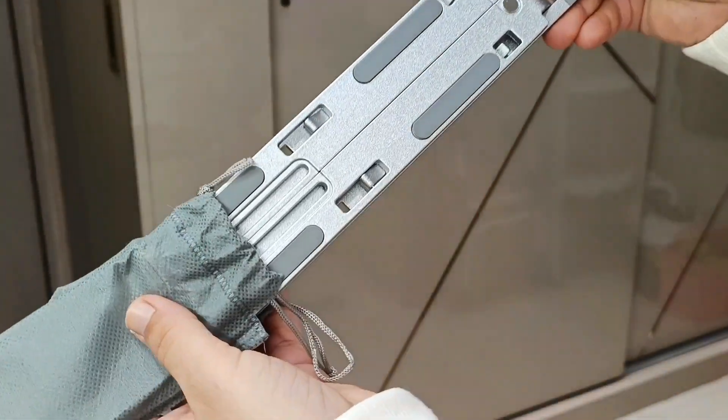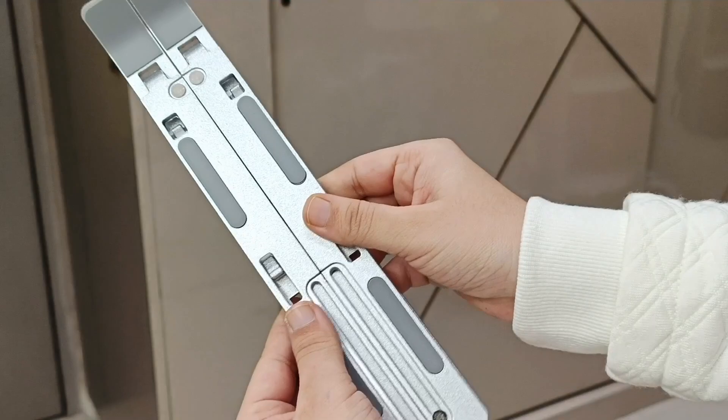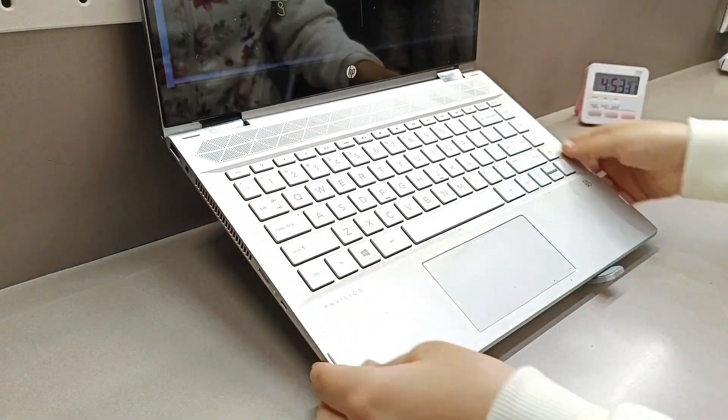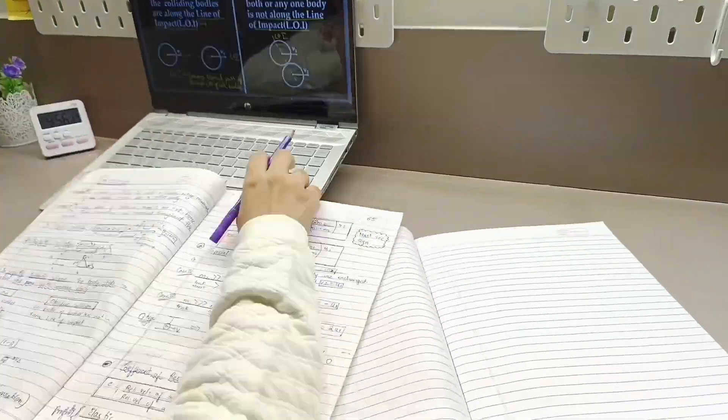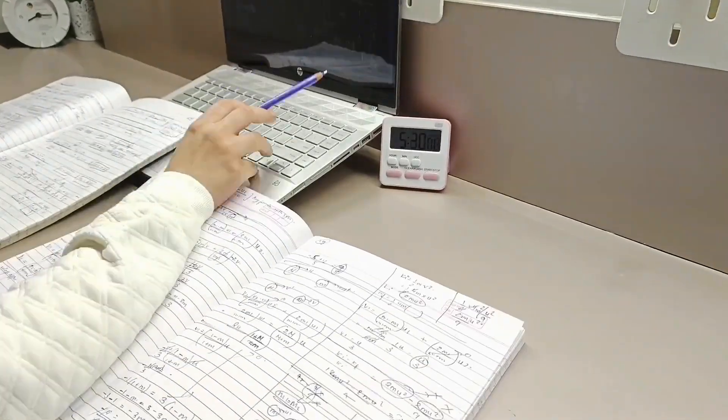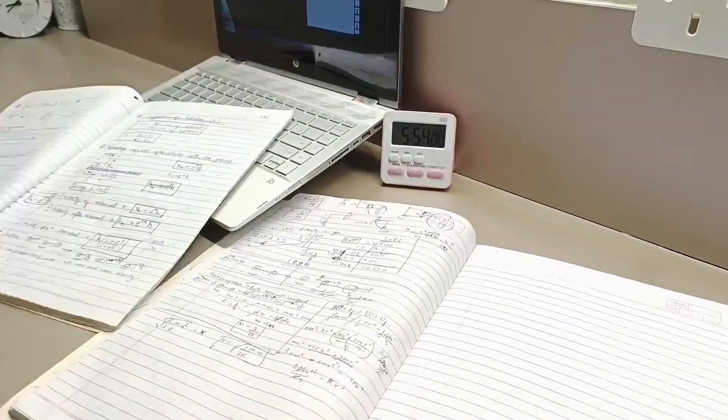And also I have received one parcel from Amazon. Can you guess what is it? So it's a laptop holder. By keeping the laptop straight on the desk, it was getting too much warm and was also affecting its battery, so I ordered this. So now let's start studying the physics.